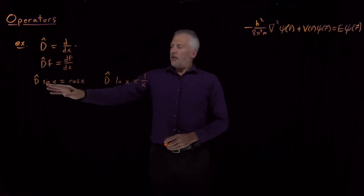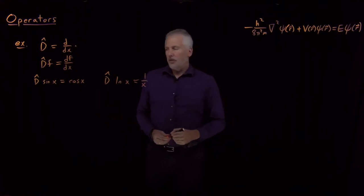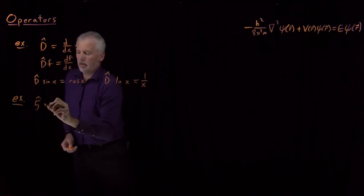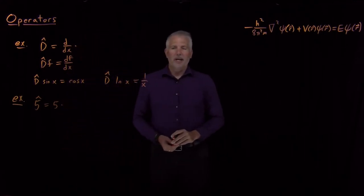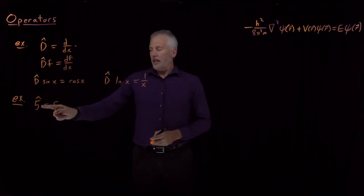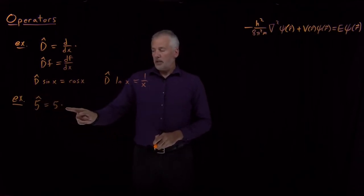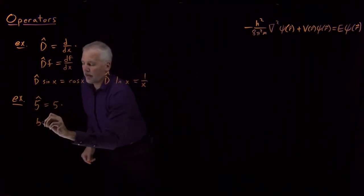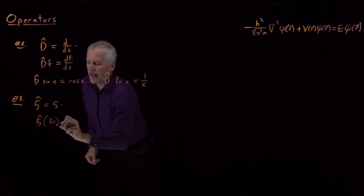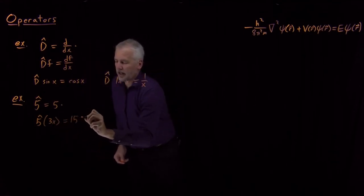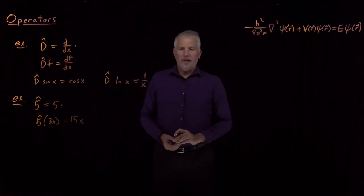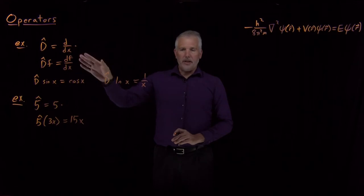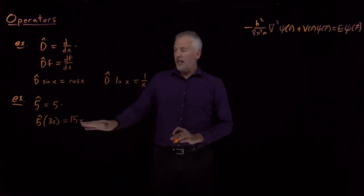That's a moderately interesting operator, but operators don't have to be complicated. They can be very simple. In fact, let's define a multiply-by-5 operator — 5-hat. I'm defining it to be: tell me what you get when you multiply the thing by 5. You can't tell me what this operator does until I tell you what it's acting on. But if I act with the multiply-by-5 operator on the function 3x, I get 5 times that function, or 15x. You've probably never thought of multiplication as being an operator before, but we can think of multiplication, differentiation, and most mathematical operations as operators.